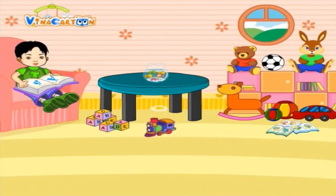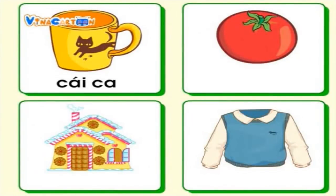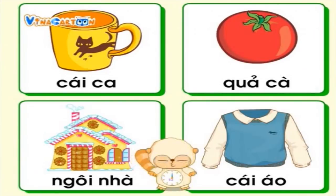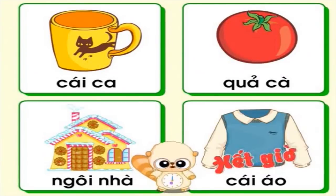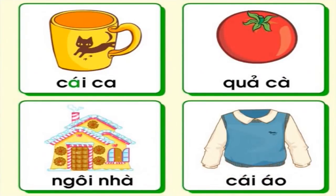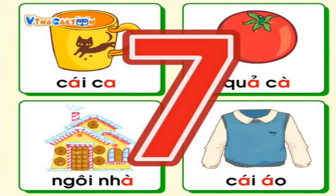Bây giờ các bạn hãy cùng Tí đếm xem có bao nhiêu chữ A trong các hình sau đây nha. Một nè, hai nè, ba nè, bốn nè, năm nè, sáu nè, bảy nè. Có tất cả bảy chữ A đó bạn.